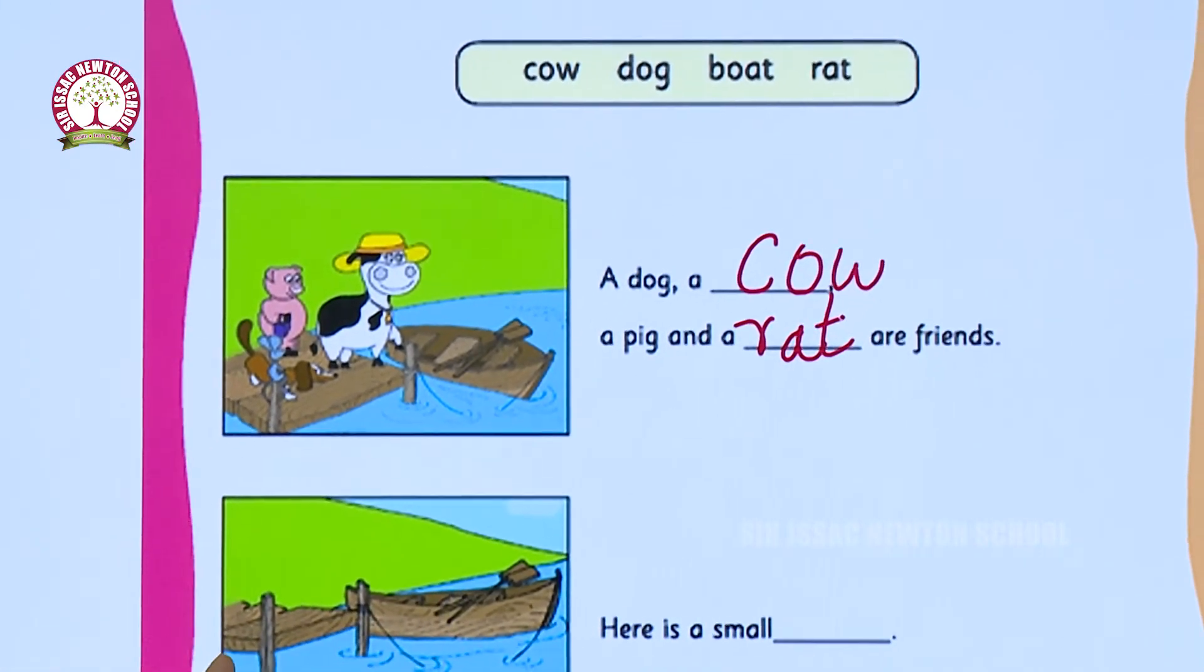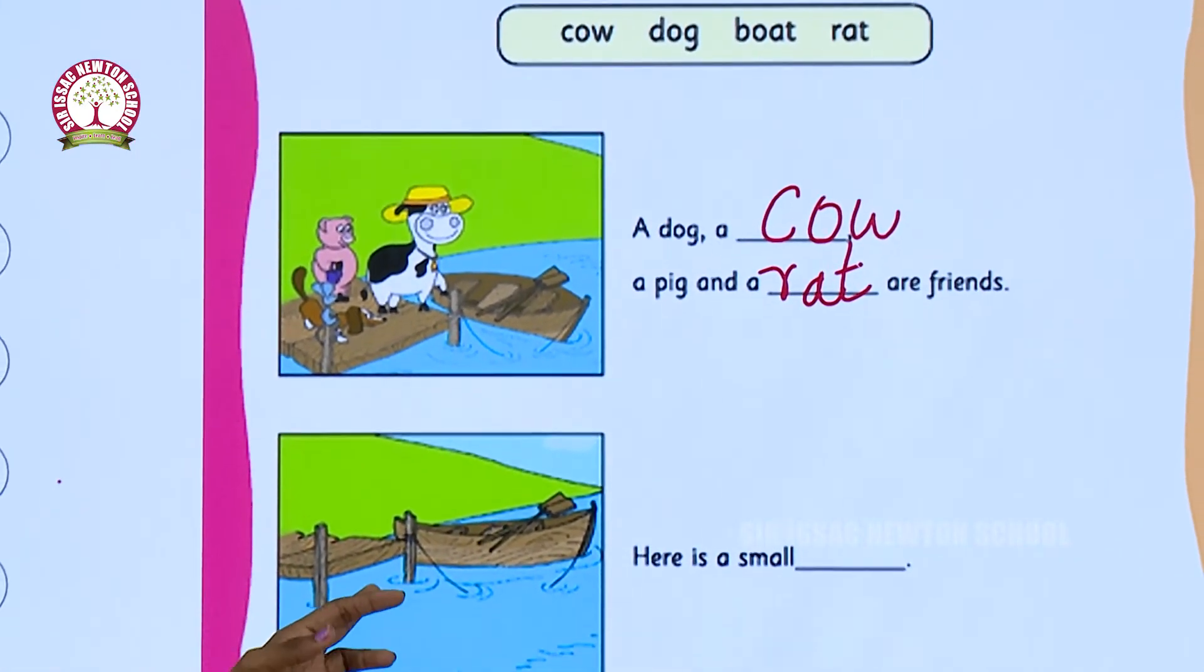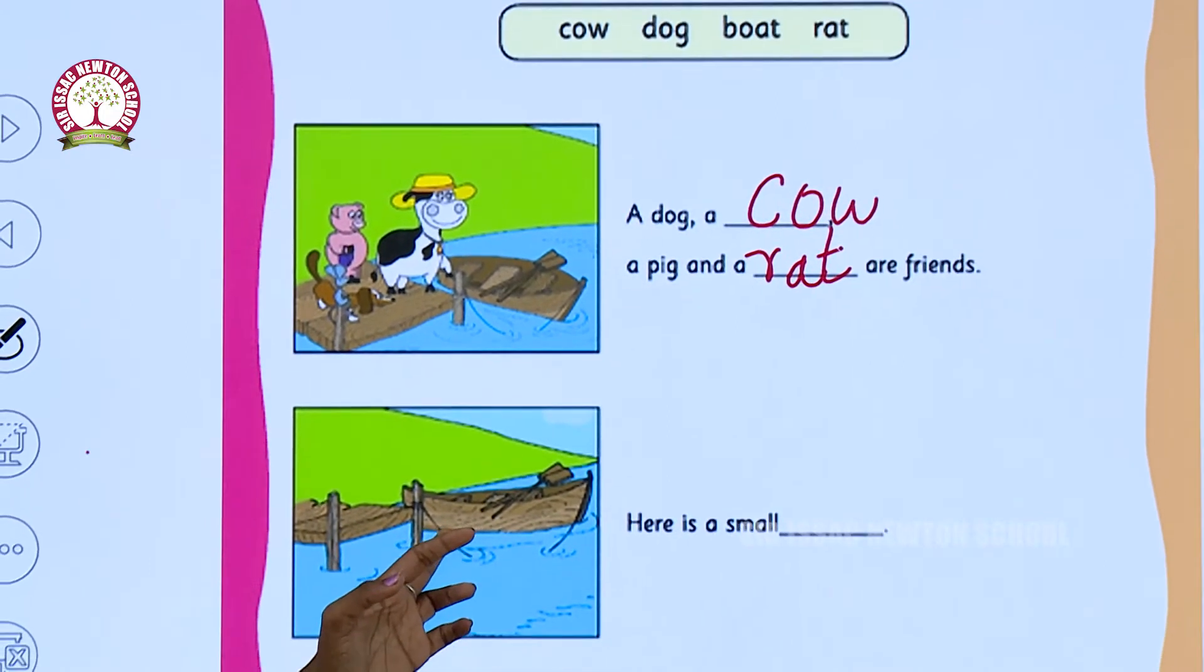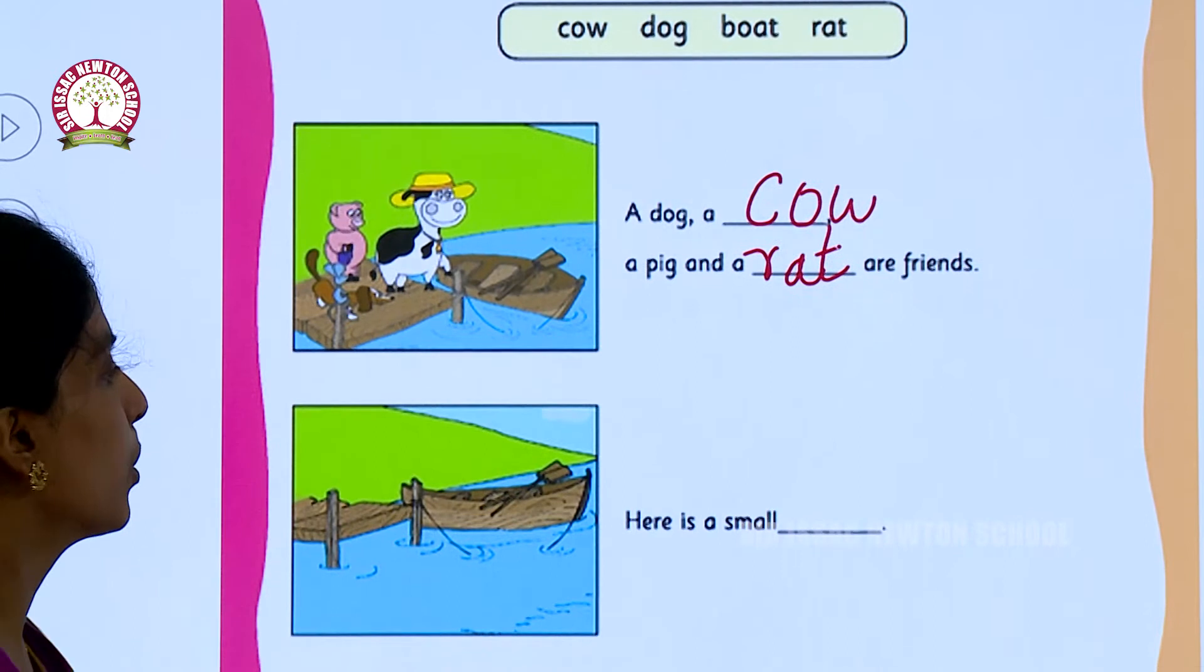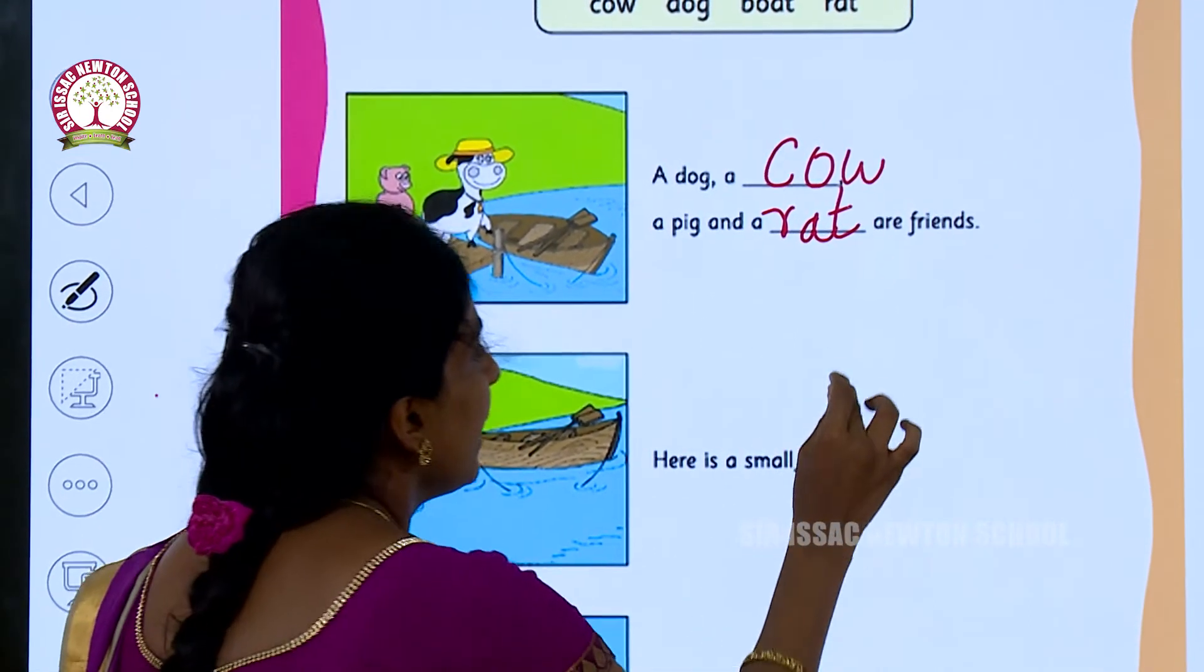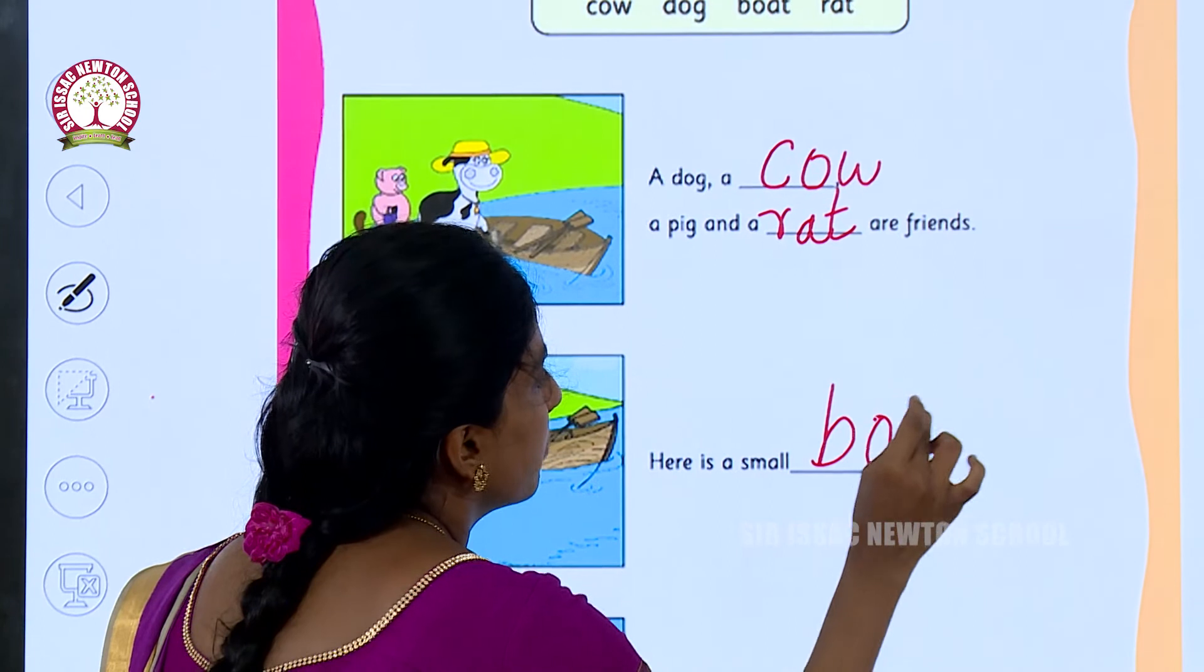Look at the second picture children. What is the picture? This is the picture of a boat. Here is a small boat. What is the spelling for boat? B-O-A-T boat.